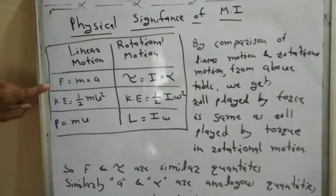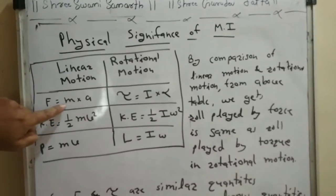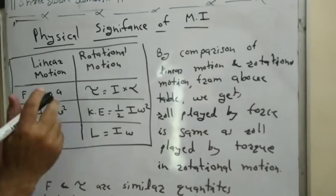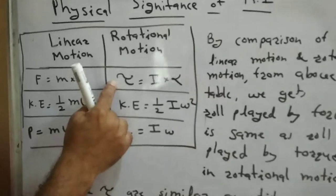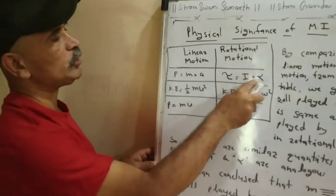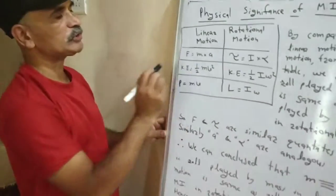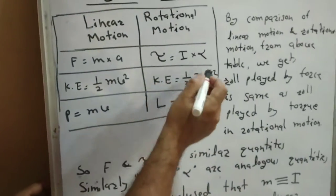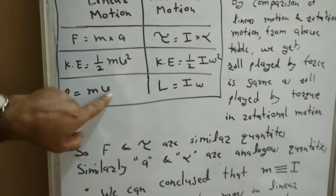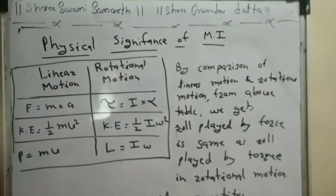In linear motion, force F = M × A is responsible for linear motion. Similarly, in rotational motion, the important term is torque (τ), which is responsible for rotational motion, and is given by τ = I × α. For kinetic energy: in linear motion, KE = ½Mv²; in rotational motion, KE = ½Iω². For momentum: linear momentum = mass × linear velocity; angular momentum = moment of inertia × angular velocity.